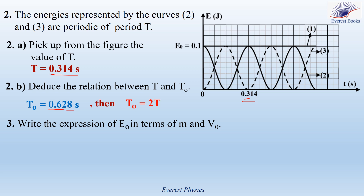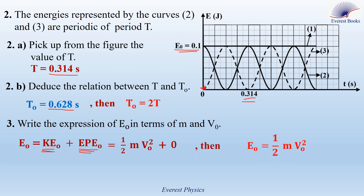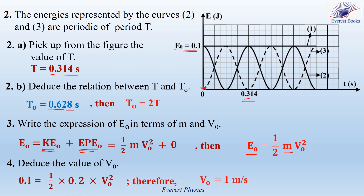Part 3: write the expression of E0 in terms of M and V0. E0 represents the initial mechanical energy, which equals the initial kinetic energy plus the initial elastic potential energy. The initial kinetic energy equals one-half M V0 squared, while the initial elastic potential energy equals zero as shown in the graph. Therefore, E0 equals one-half M V0 squared. Part 4: deduce the value of V0. Replacing E0 equals 0.1 joules and mass equals 0.2 kilograms, V0 equals 1 meter per second.